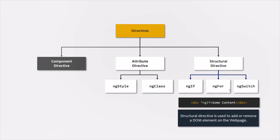We typically add directives with an attribute selector, but technically the selector of a directive can be configured like the selector of a component. We have learned about different types of selectors in Angular — CSS class selector, attribute selector, and HTML tag selector. Generally, when we use the selector of a component, we use it like an HTML tag. But in the case of a directive, we use the selector like an HTML attribute. Technically, we can also use the selector of a directive like a CSS class, an HTML tag, or even an ID selector, but mostly we use directives like an HTML attribute.